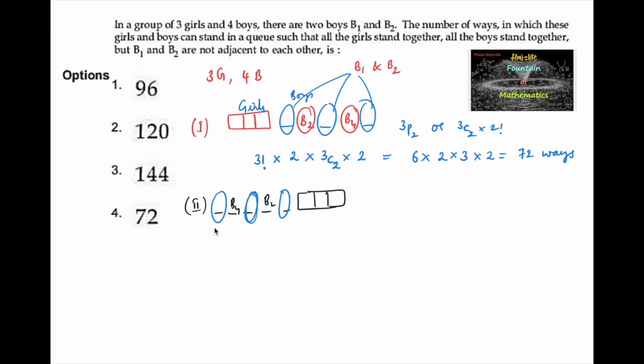So again the same way, B1 and B2 can be placed in 3C2 into 2, and B2 and B4 can be done in two ways, and these three girls can be done in 3 factorial ways.